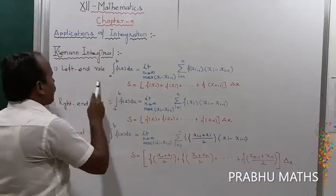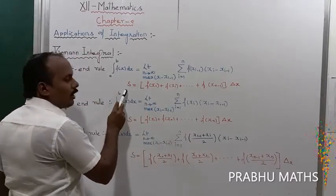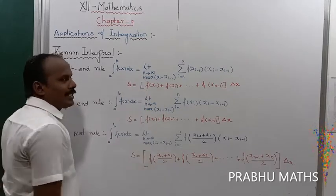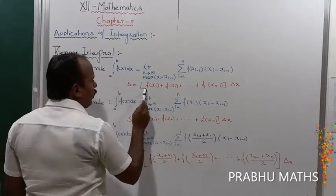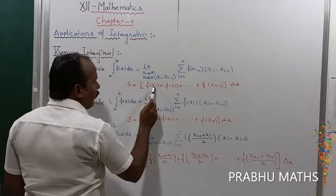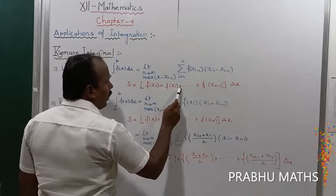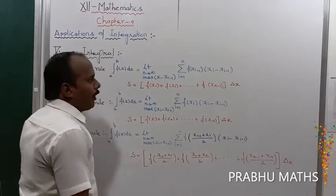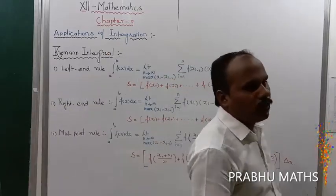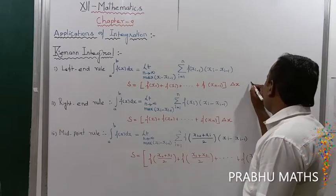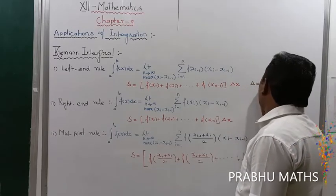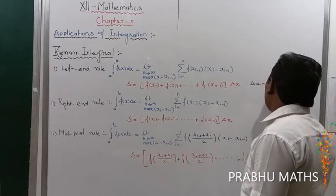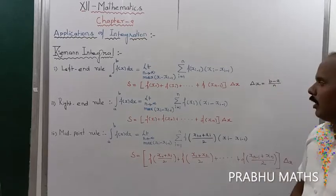Using this formula for the Left End Rule, S is equal to f(x₀) + f(x₁) + f(x₂) + ... + f(x_(n-1)) times delta x, where delta x equals (b minus a) divided by n.